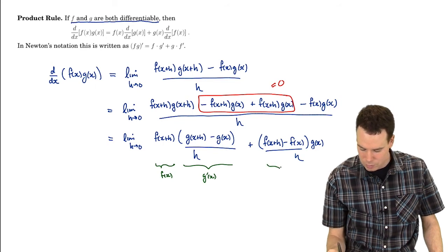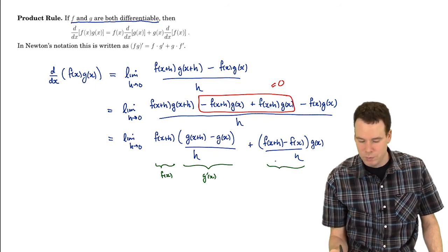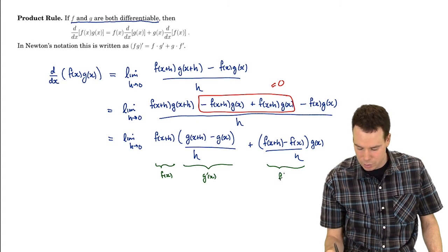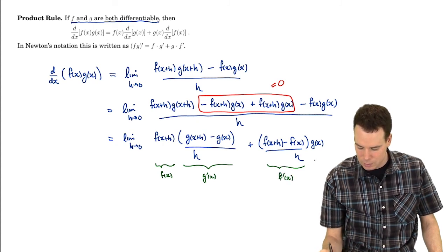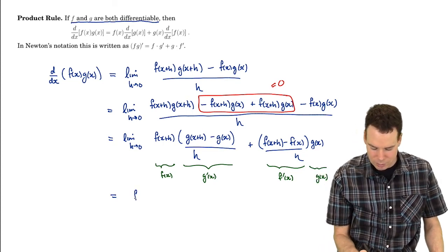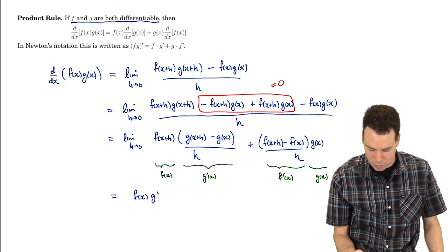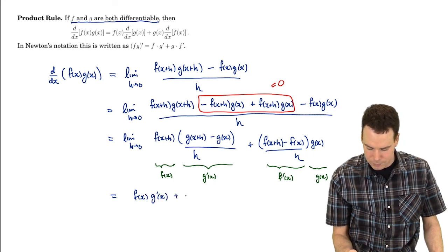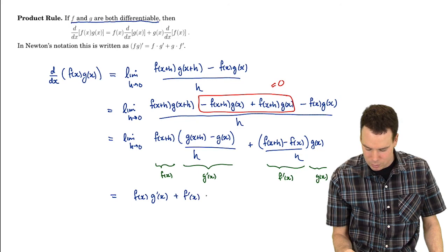And what does this go to? Well that's the limit definition of the derivative of f, so that's f'(x). And as h goes to zero, well g(x) is just g(x). So this whole thing, this whole limit boils down to f(x)g'(x) plus f'(x)g(x).